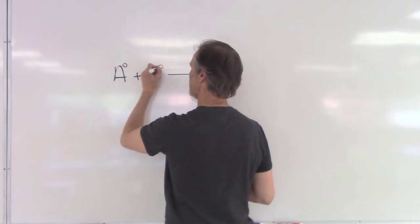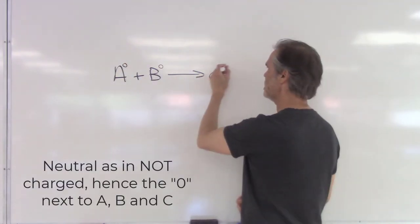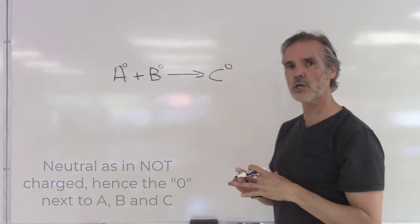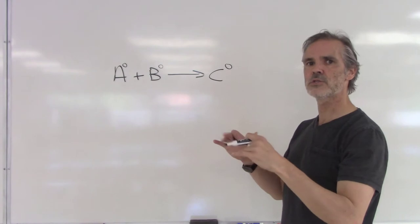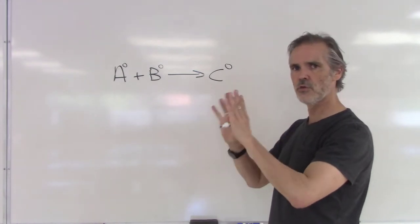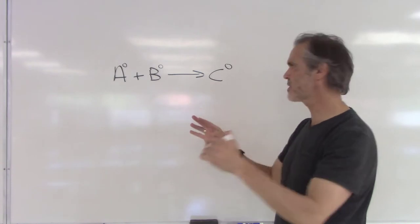We have A here, B here, and then it creates a molecule that's neutral as well, C there. I just want to make sure you understand there's no extra electrons anywhere here. Those molecules are happy by themselves.